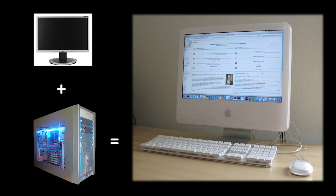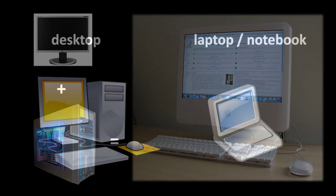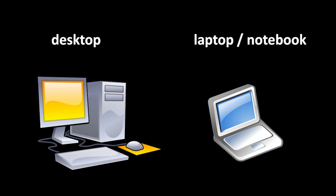Confusingly, however, there are examples where a monitor and a computer are housed together in one unit. For example, Apple sells a line of computers called iMacs. And also, a laptop is a system where the monitor and the computer have been housed together in one physical unit.